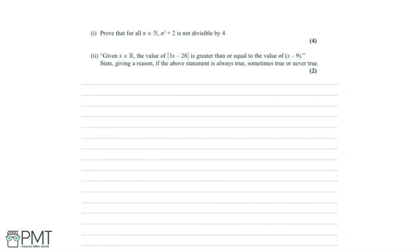Let's take a look at this proof question. Part (i) says we need to prove that for all values of n contained within the natural numbers, n squared plus 2 is not divisible by 4, and this is for four marks. So we're going to decode the question — we can see that the natural numbers means for example 1, 2, 3, 4, etc.